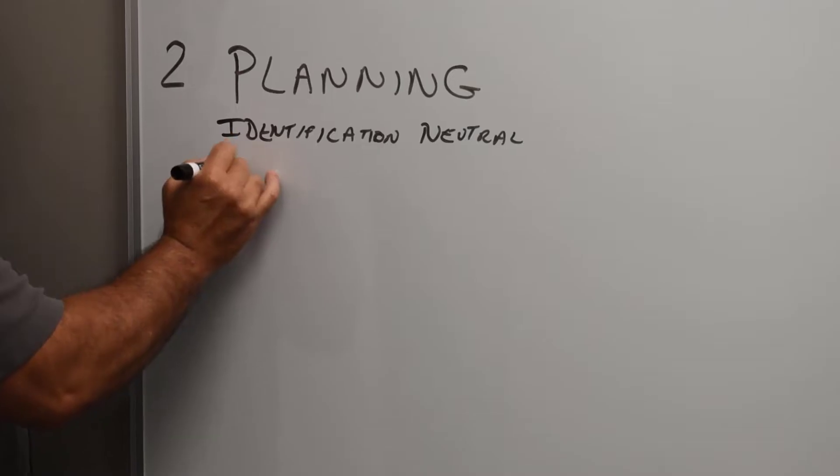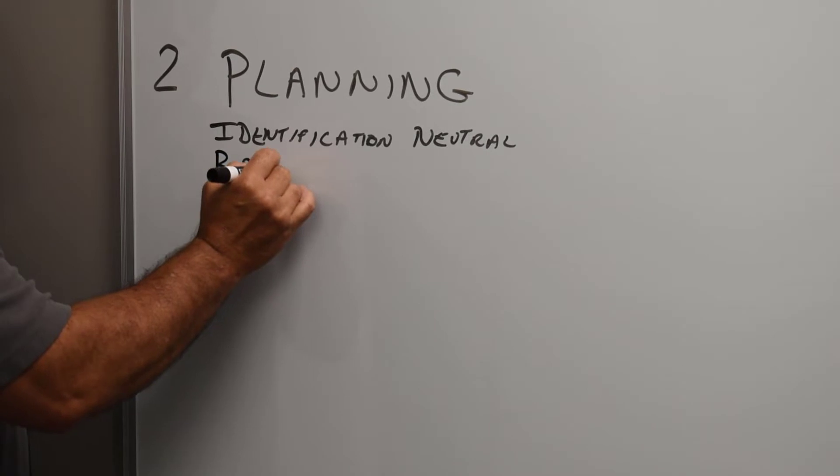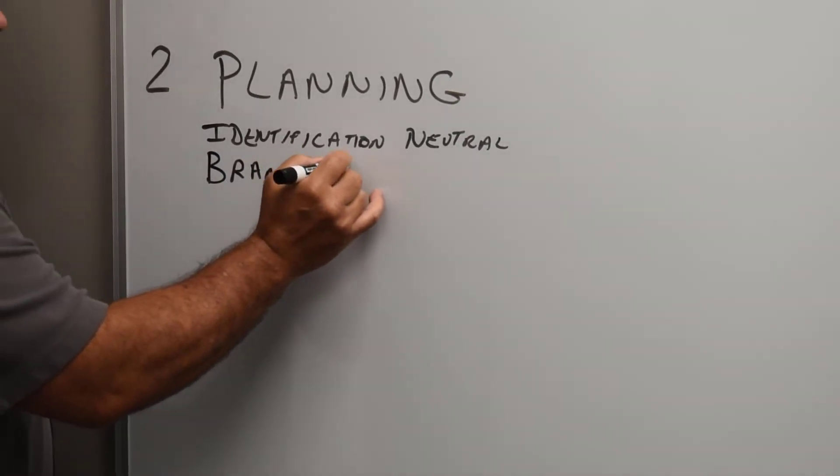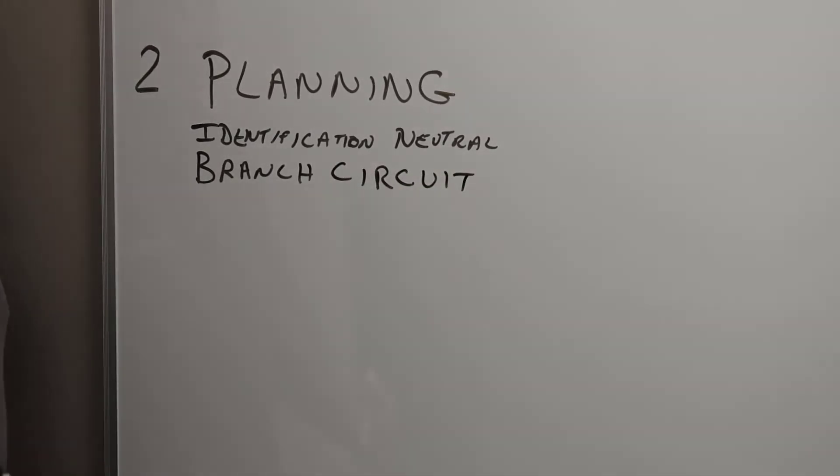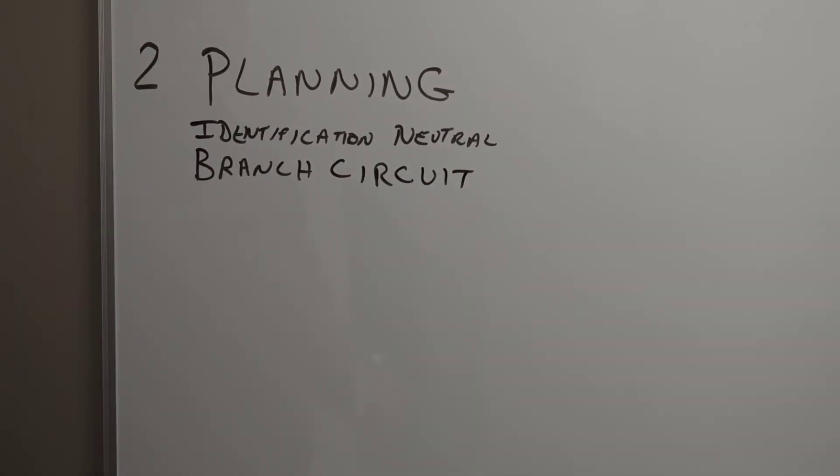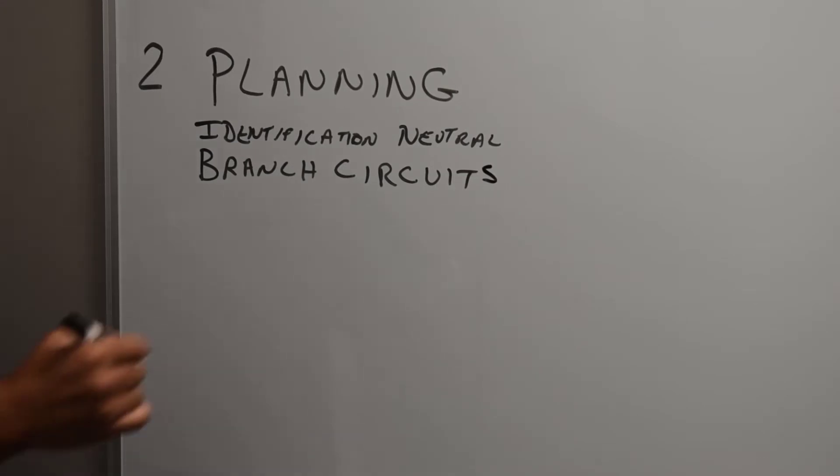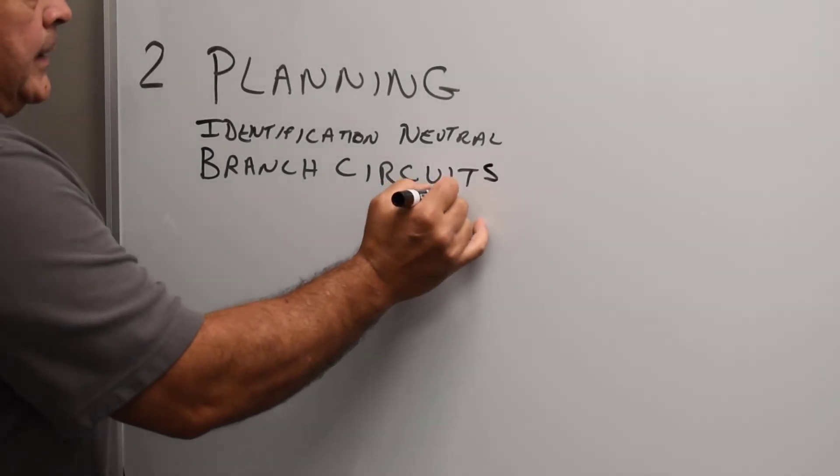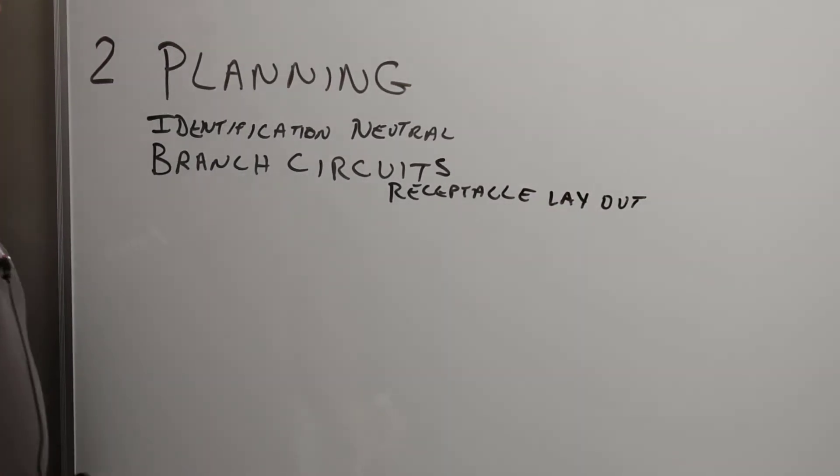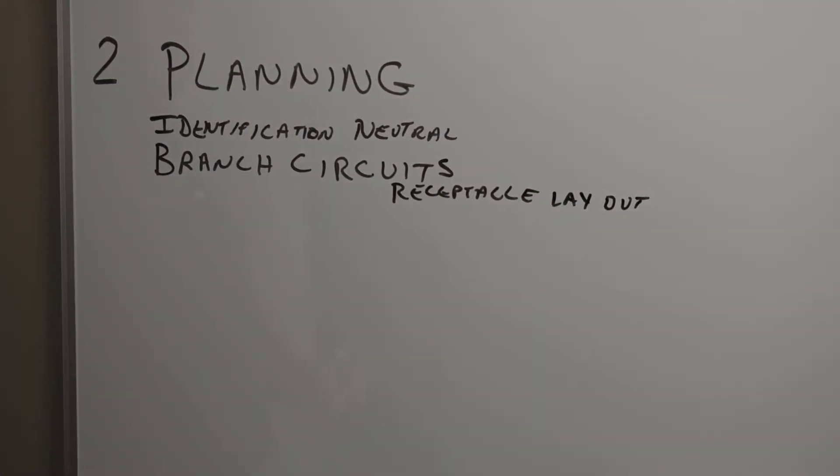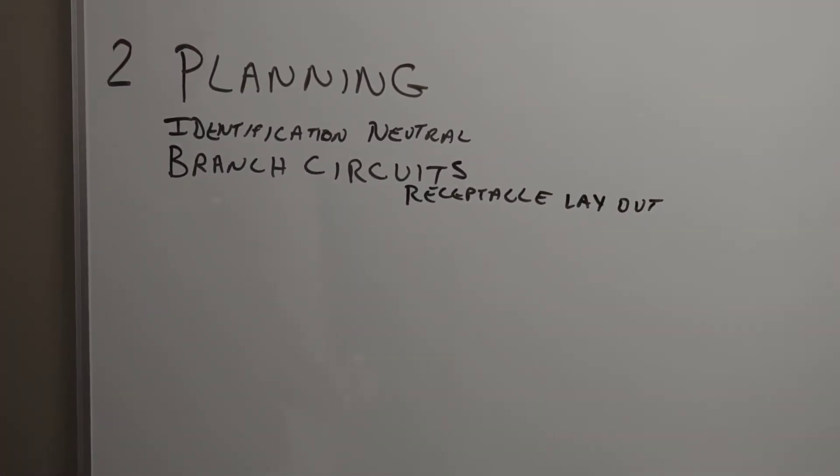Then we get into branch circuits, lots of information about branch circuits. There's some branch circuits that are actually required based on the occupancy we're talking about, and then sizing those circuits. And then also with the branch circuits, we've got receptacle layout, and that layout is mainly for dwelling units and then in recent times some of the commercial areas where we have to, so receptacles laid out and those receptacles have to be served by branch circuits based on the size.